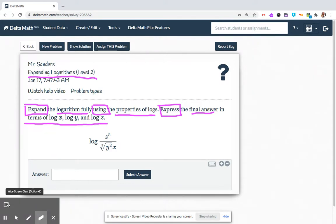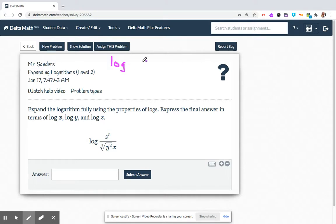Alright, so here's our original problem. Log of z to the 5th over, now right away, let's go ahead and rewrite this y. This y is a cube root squared. Cube root tells us as a fractional exponent what the denominator is in the fractional exponent.